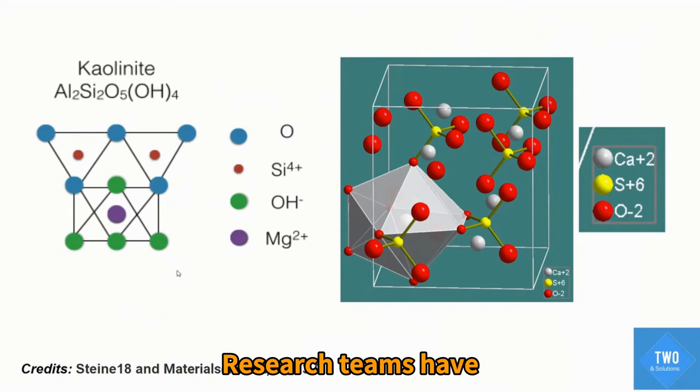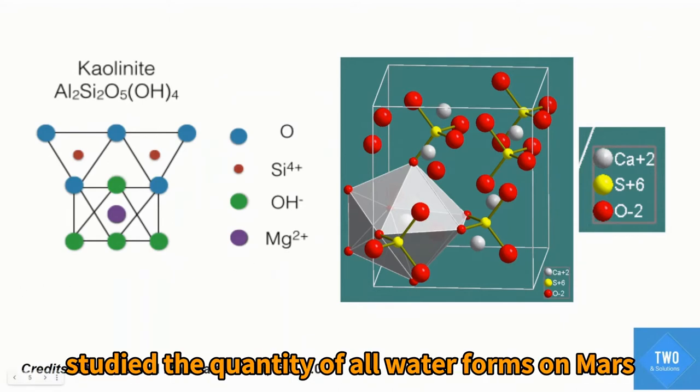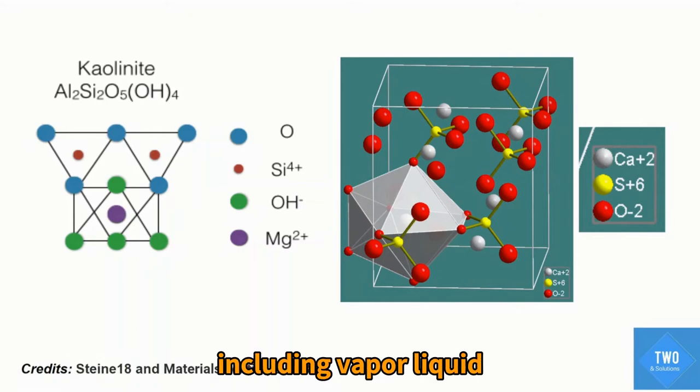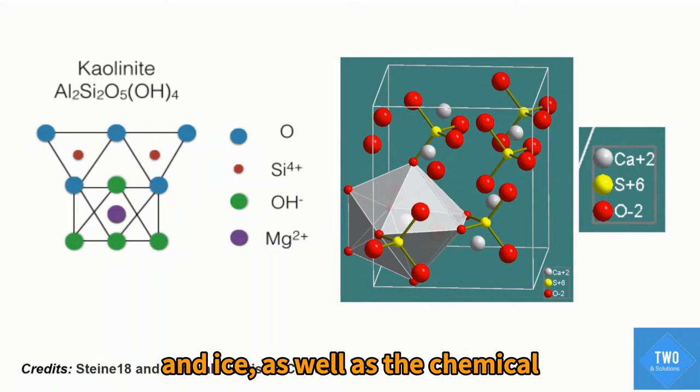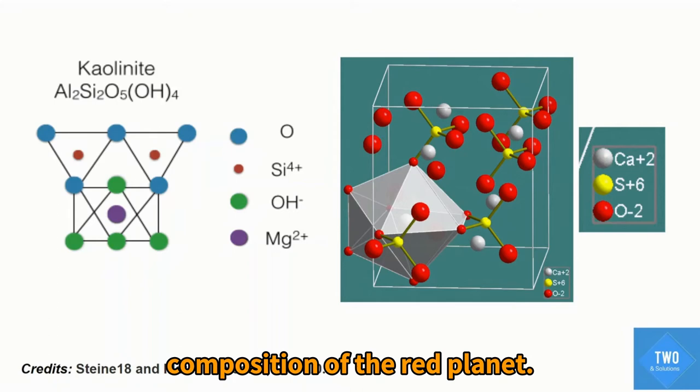The research team has studied the quantity of all water forms on Mars, including vapor, liquid, and ice, as well as chemical composition of the red planet.